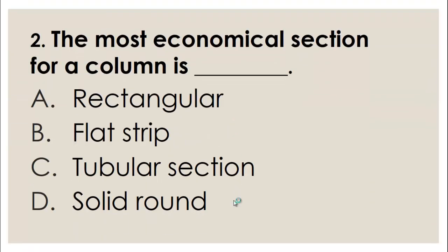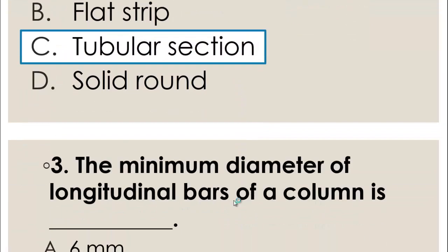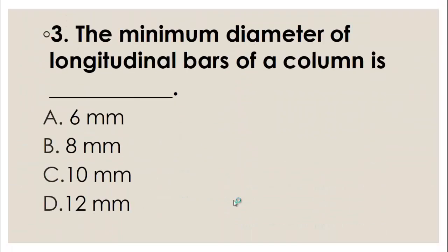MCQ number two: The most economical section for a column is — A) Rectangular, B) Plate strip, C) Tubular section, D) Solid round. Among the following, the most economical section for a column is a tubular section, so the right answer for this question is C, tubular section.